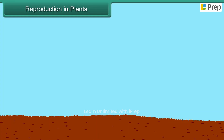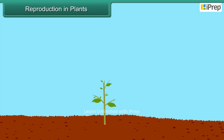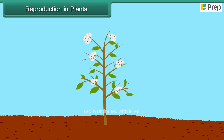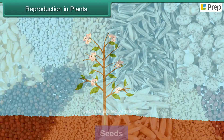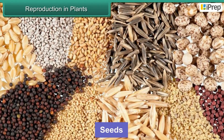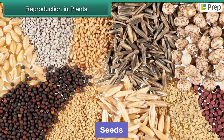Seeds play an important role in the reproduction of flowering plants. Seeds vary in shape, colour, and size.